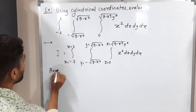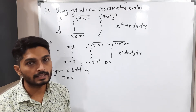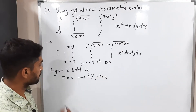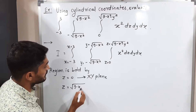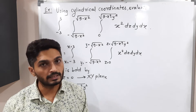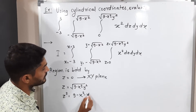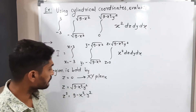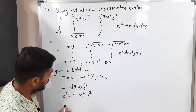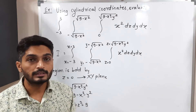The region is bounded by z = 0, which is the xy-plane, and the upper limit of z is √(9−x²−y²). To remove the square root, we square both sides: z² = 9 − x² − y². Shifting x² and y² to the left side gives x² + y² + z² = 9.